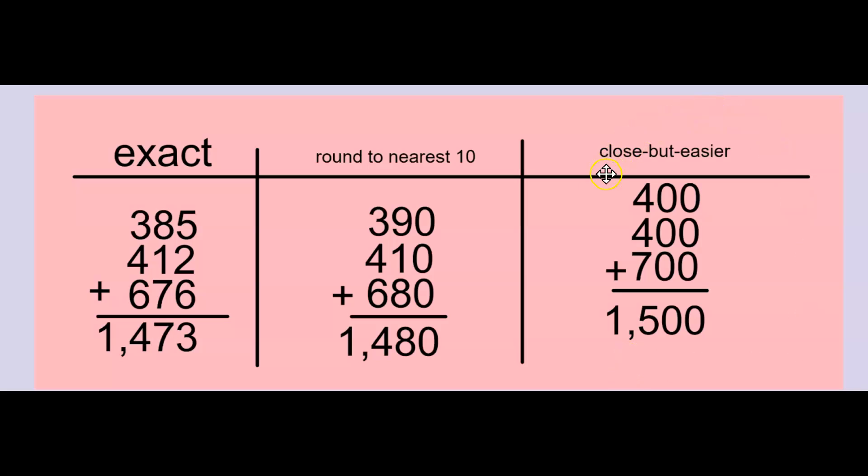Here I chose close but easier numbers. For 385 I chose 400, for 412 I chose 400, for 676 I chose 700. When I added those together, I got 1,500.